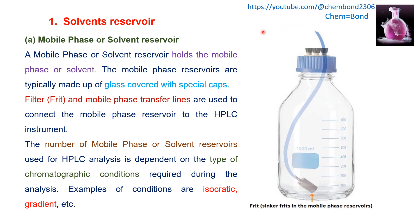The mobile phase transfer line will connect the mobile phase with the other parts of the HPLC. There are two conditions: isocratic and gradient. Isocratic or gradient conditions will determine the number of mobile phase or solvent reservoirs used for HPLC analysis.